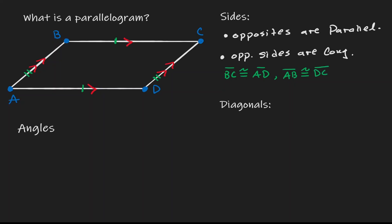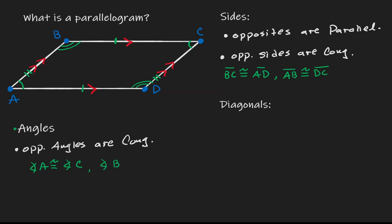Now let's take a look at the properties when it comes to angles. Within a parallelogram, opposite angles are going to be congruent to each other. If that is the case, then angle A is opposite to angle C, so we can claim that they are congruent to each other. And in addition, angle B is opposite to angle D, therefore they are also congruent to each other.